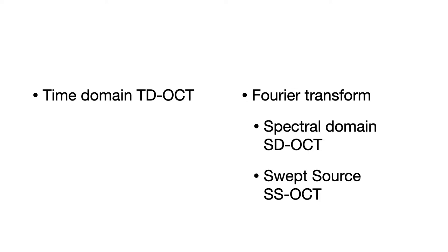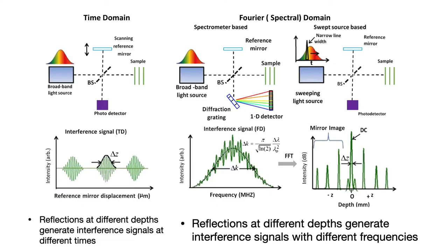There are two main technologies in OCT: the original time domain OCT and the currently used Fourier transform, most commonly known as spectral domain OCT, and a variety called swept-source OCT. In time domain, reflections from different depths of the object generate interference signals at different times — that's how we reconstruct the image. In spectral domain, reflections of different depths generate interference signals with different frequencies, and we use Fourier transform to determine the depths.